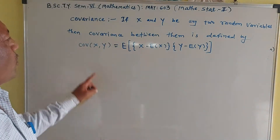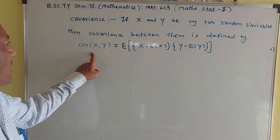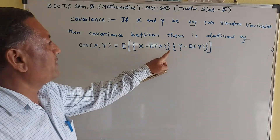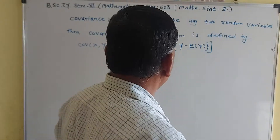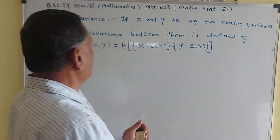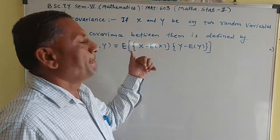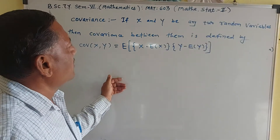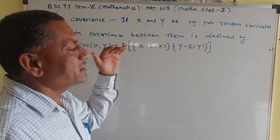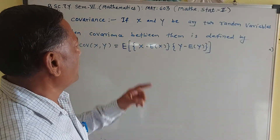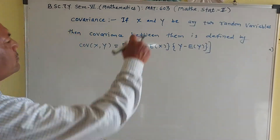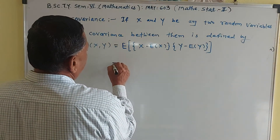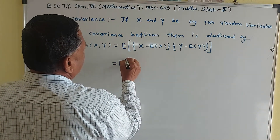So this is the definition of covariance between X and Y: it is equal to expectation of (X minus E[X]) times (Y minus E[Y]). You know the definition of expectation of a random variable X — whether X is a discrete random variable or a continuous random variable. Now this can be written as expectation of the product.